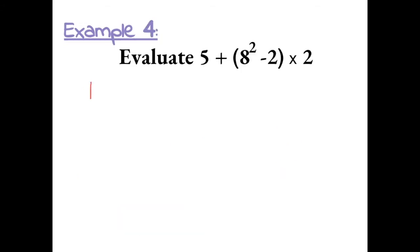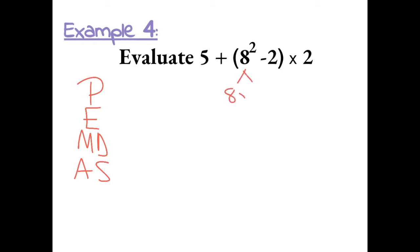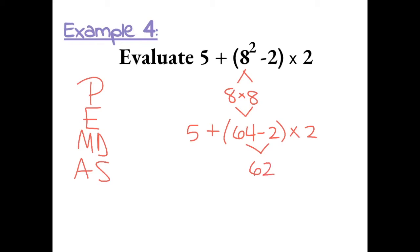Example 4: Evaluate. Let's use order of operations. First, we need to do what's inside the parentheses. Because there are multiple operations inside the parentheses, we need to follow order of operations in there as well. First, we do exponents: 8 squared is 8 times 8, which gives us 64. We still keep our parentheses because we haven't completely simplified — 64 minus 2 is 62.